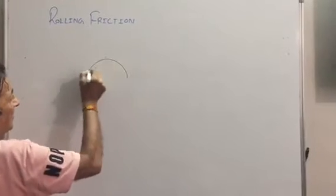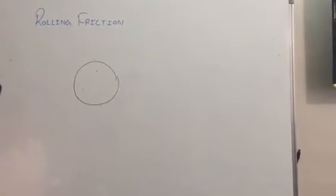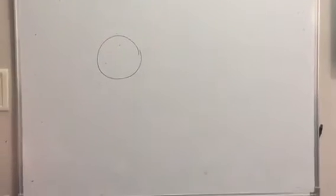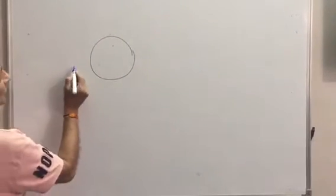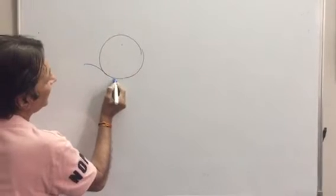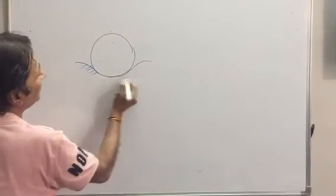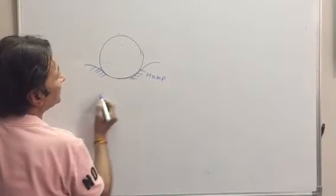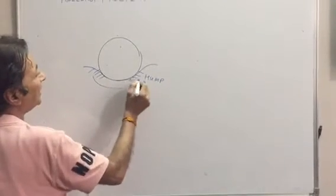Imagine a wheel that is lying on a surface. The wheel on both sides creates a hump. What creates? A hump.